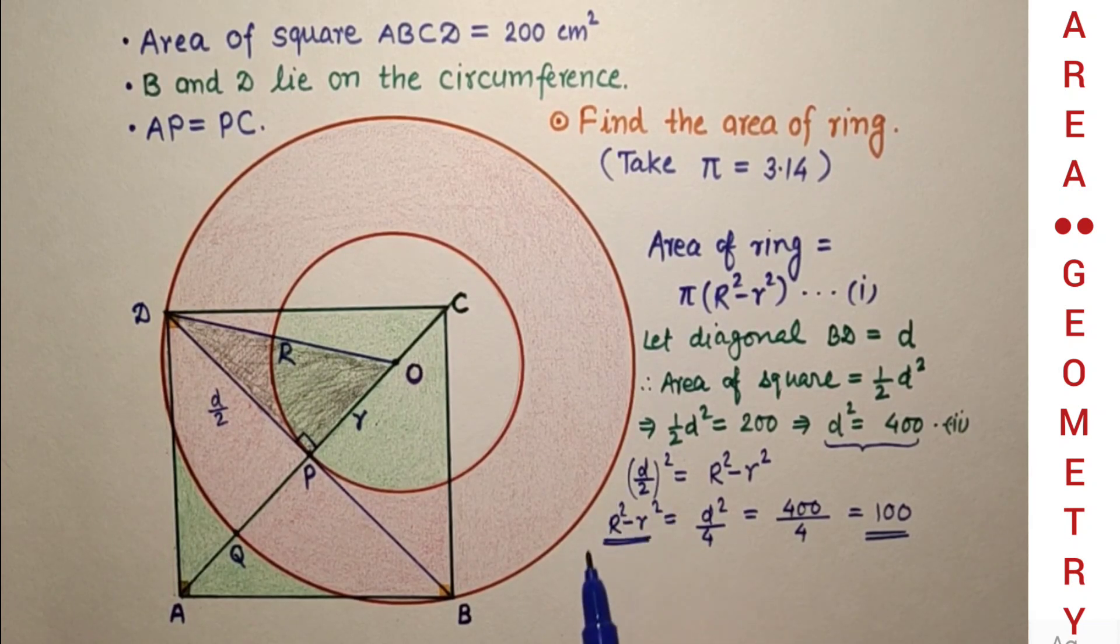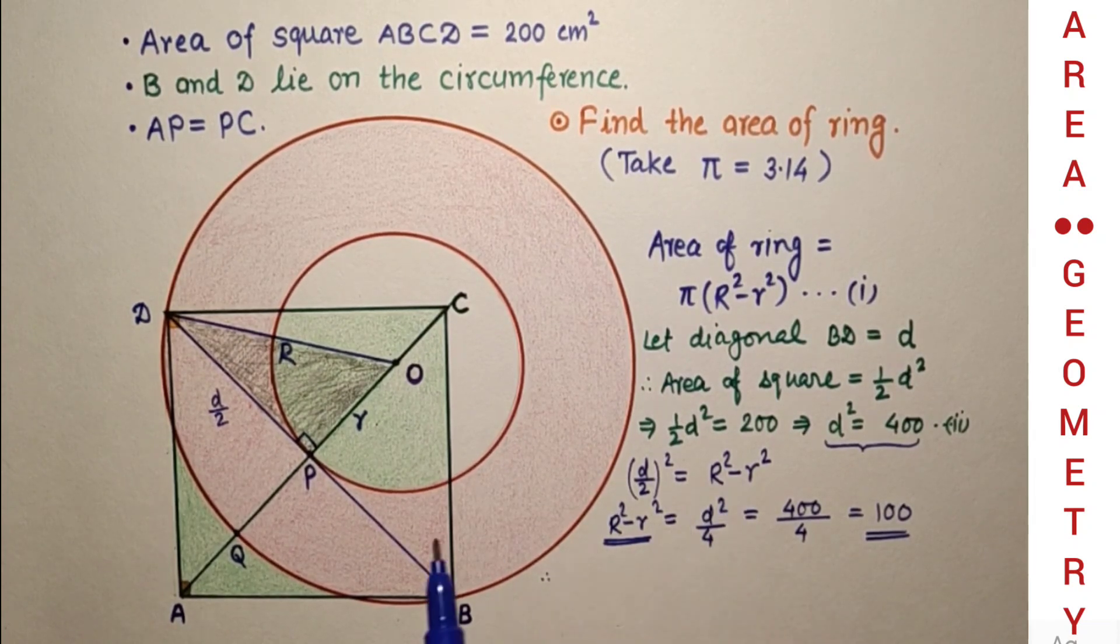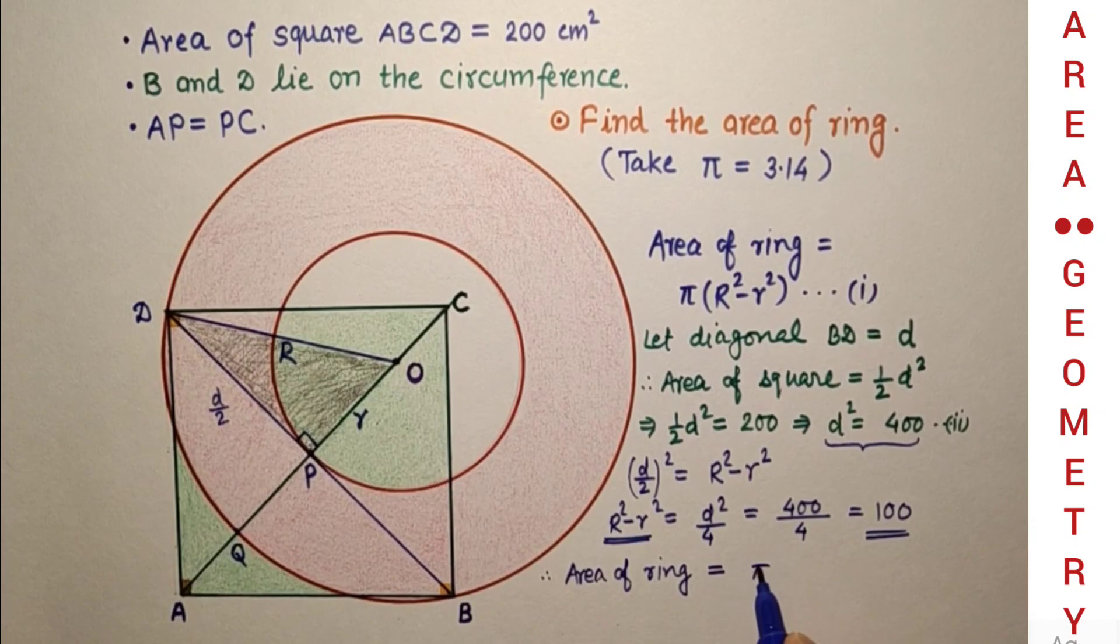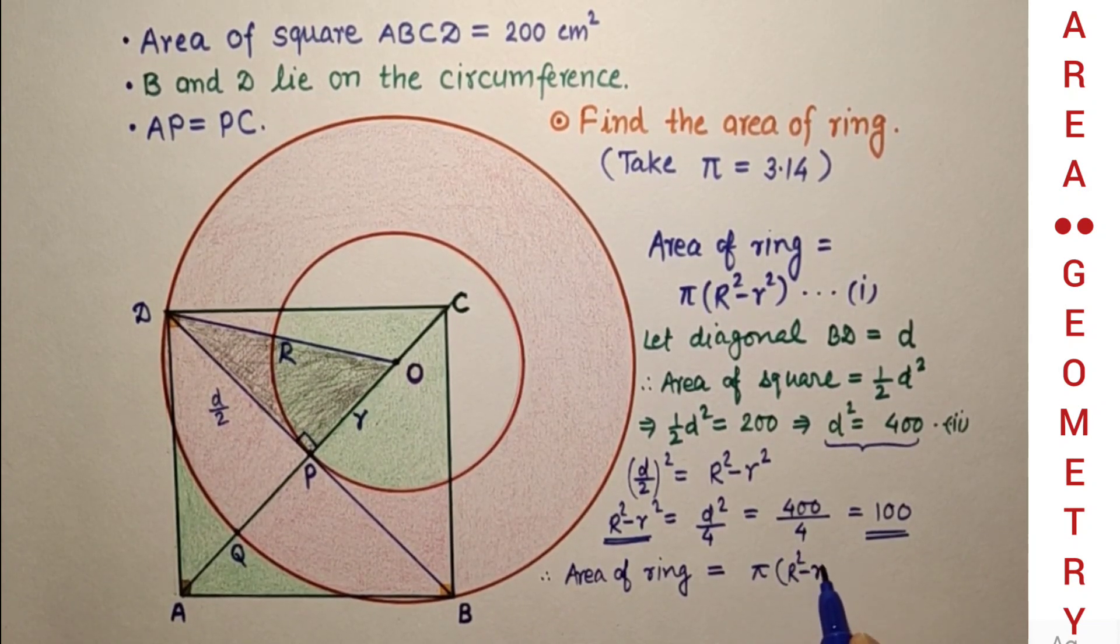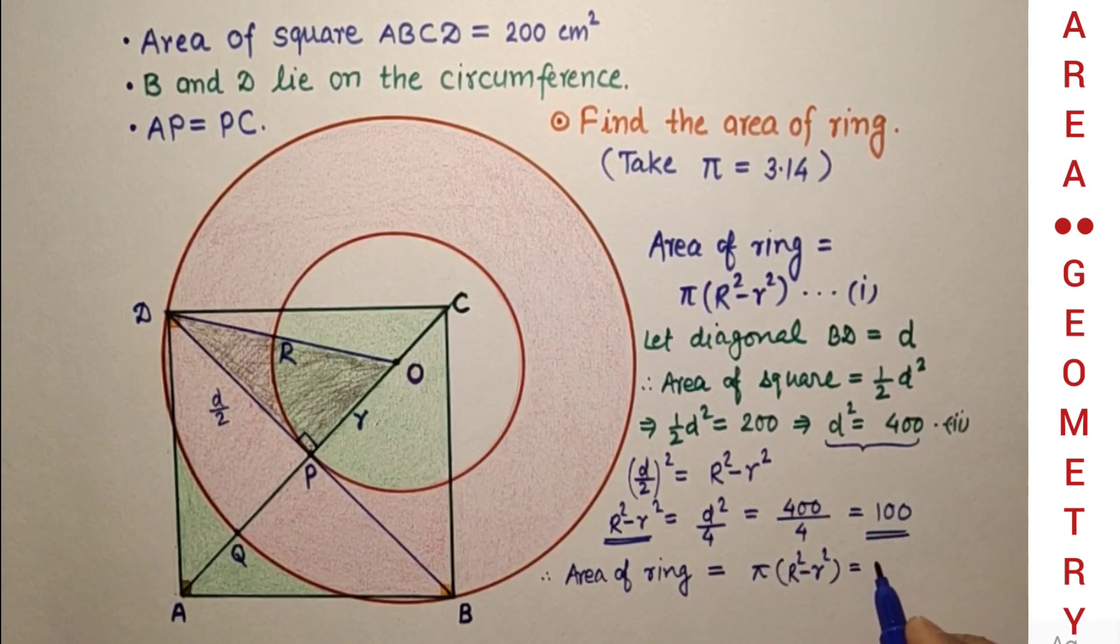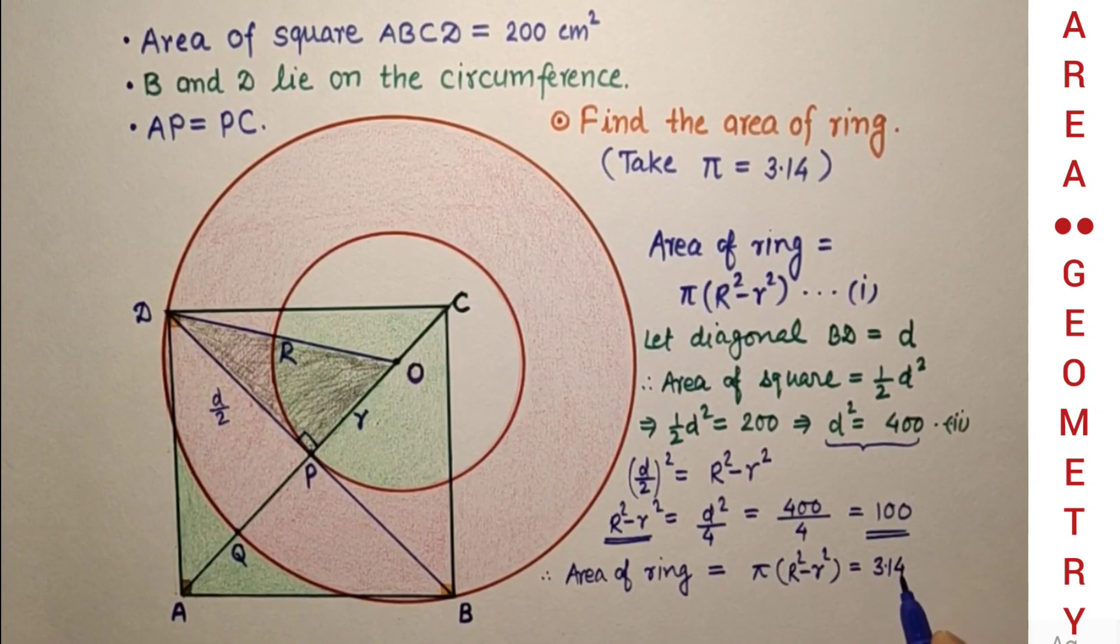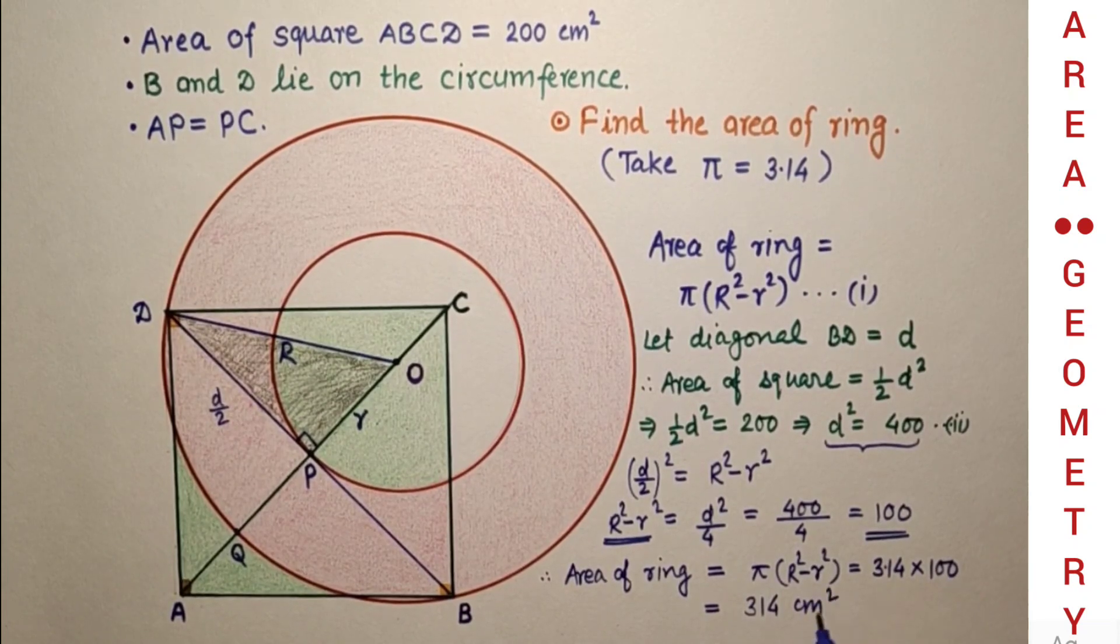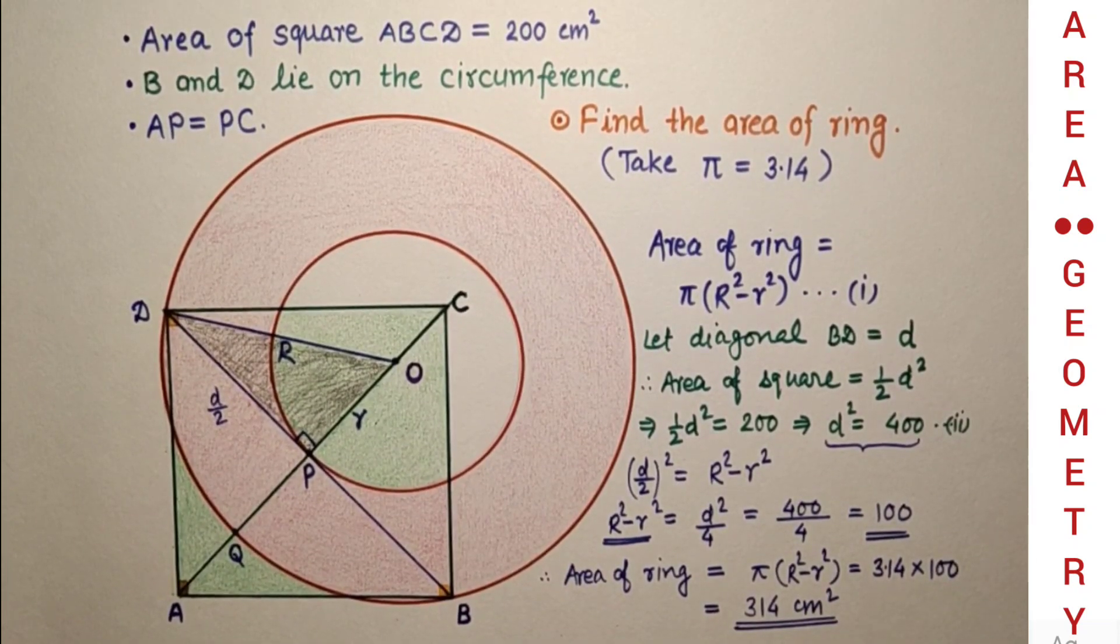Substituting R² - r² = 100 in equation 1, the required area of ring equals π(R² - r²) = 3.14 × 100 = 314 cm². And that is the answer.